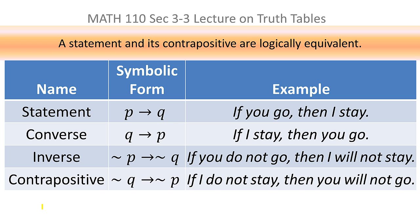An important fact to know is that a statement and its contrapositive are always logically equivalent. So p implies q is logically equivalent to not q implies not p. If you did a truth table for both, you'd find they are identical.